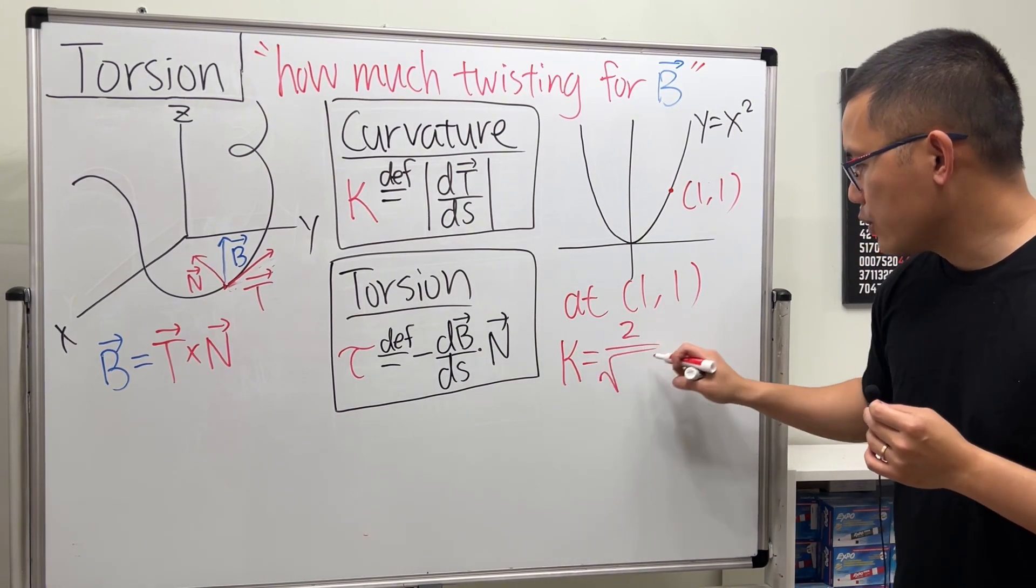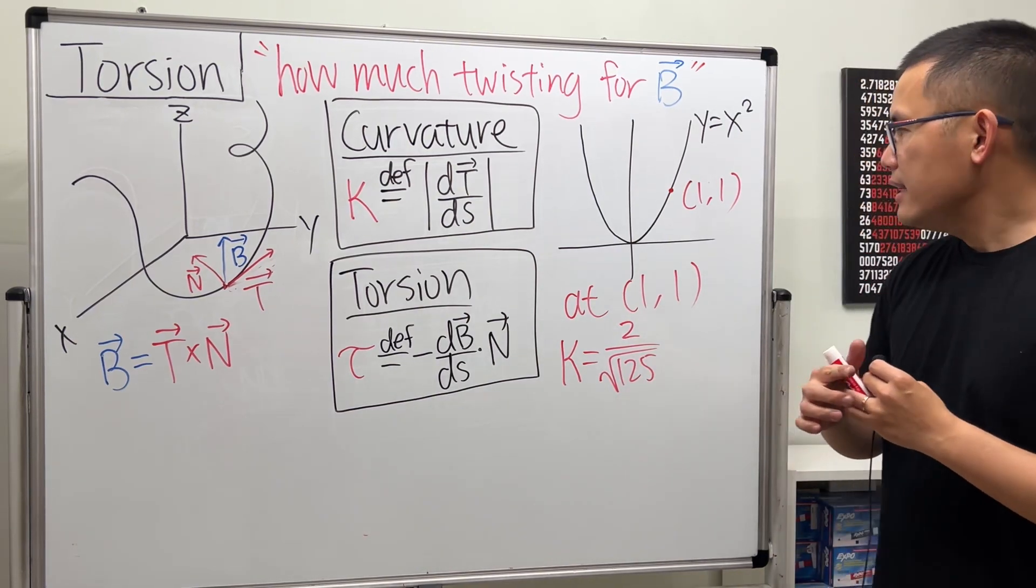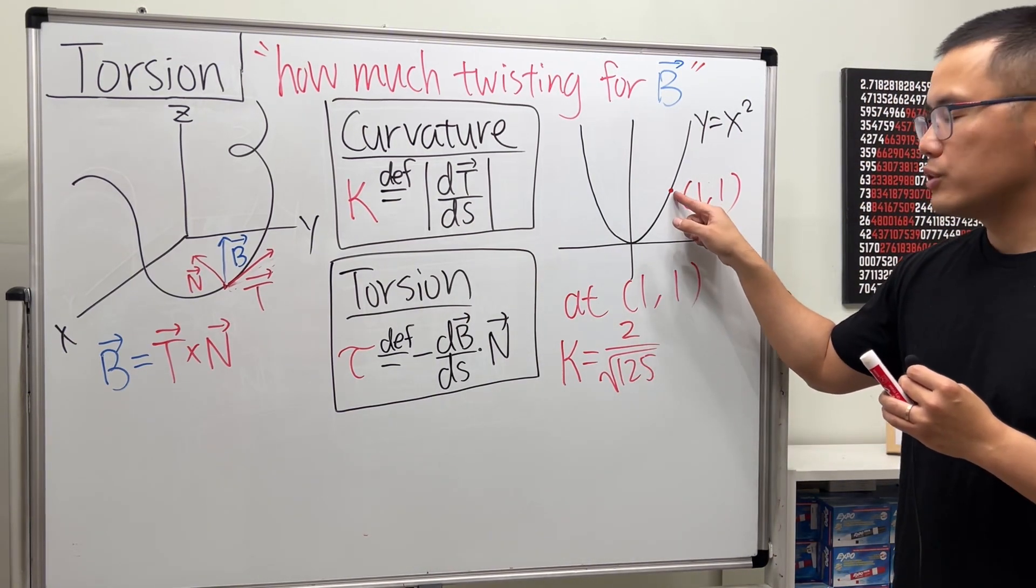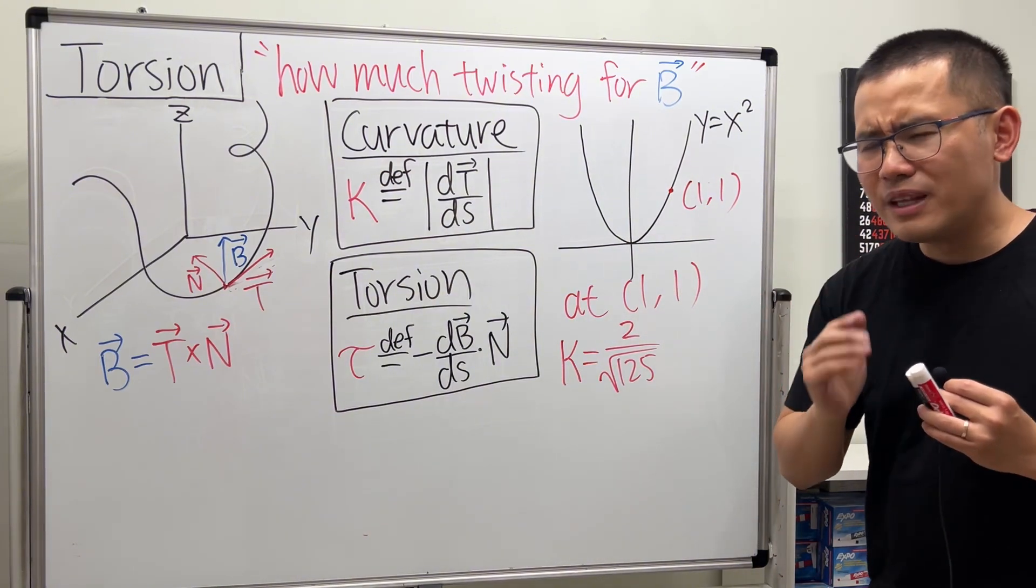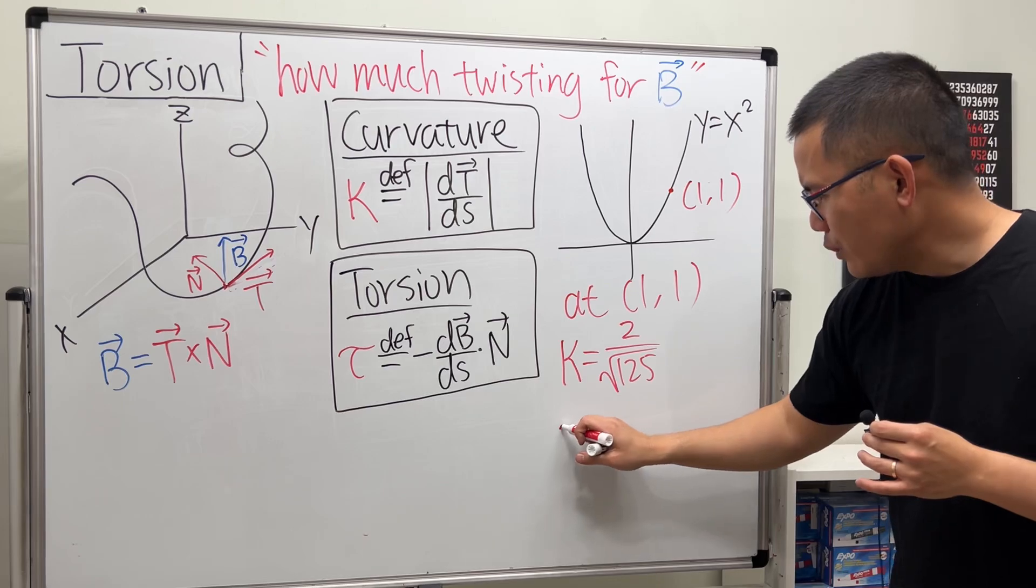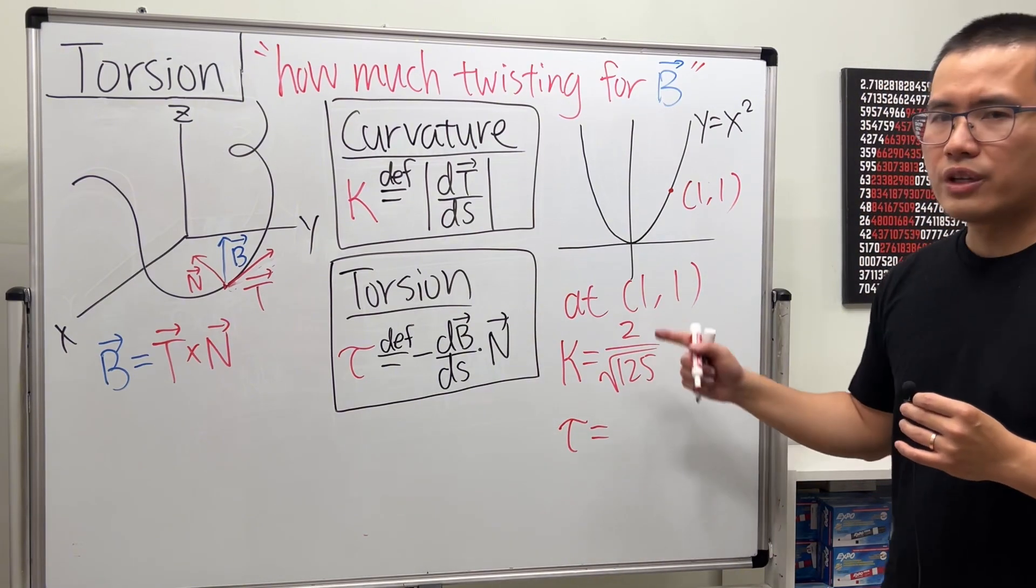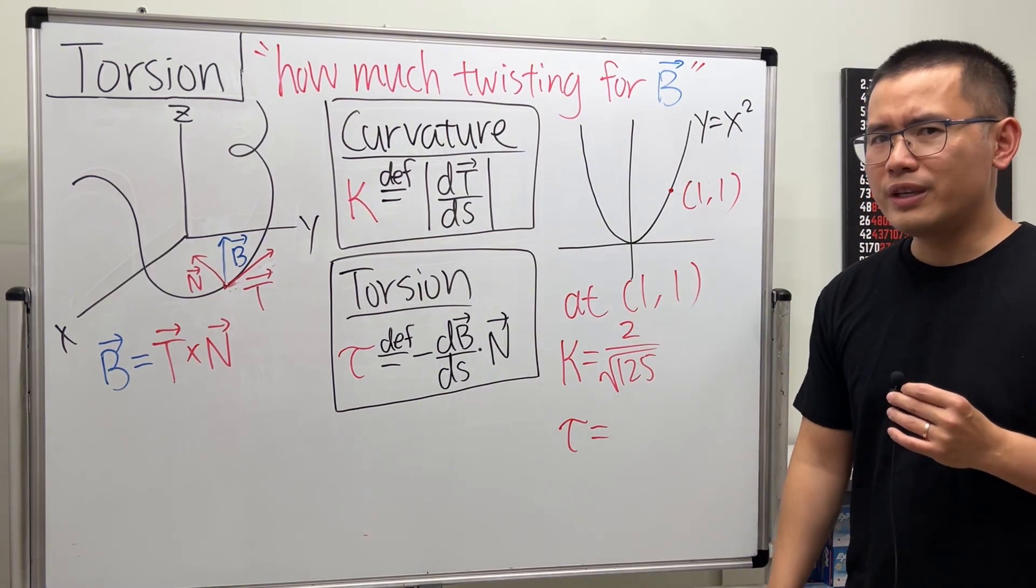So I will remind you, at (1, 1) we found our curvature κ, which was 2 over √125. And this right here tells you how much the curve is bending at this point.